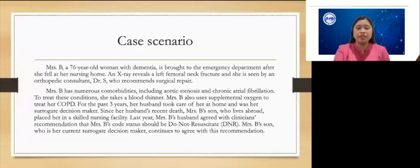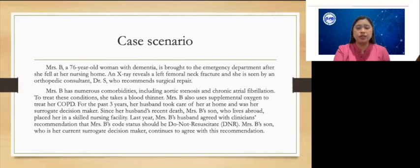Mrs. B., a 76-year-old woman with dementia, is brought to the emergency department after she fell at her nursing home. An x-ray reveals a left femoral neck fracture, and she is seen by an orthopedic consultant, Dr. S., who recommends surgical repair. Mrs. B. has numerous comorbidities, including aortic stenosis and chronic atrial fibrillation. To treat these conditions, she takes a blood thinner. Mrs. B. also uses supplemental oxygen to treat her COPD. For the past three years, her husband took care of her at home and was her surrogate decision-maker. Since her husband's recent death, Mrs. B.'s son, who lives abroad, placed her in a skilled nursing facility.